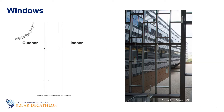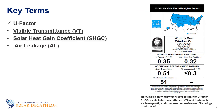The purpose of a window is really to separate our comfortable environment inside the building from the weather outside, while still allowing for light and views. But how do we characterize how well a window is serving its purpose? There are a few characteristics used in window labels that do just that.